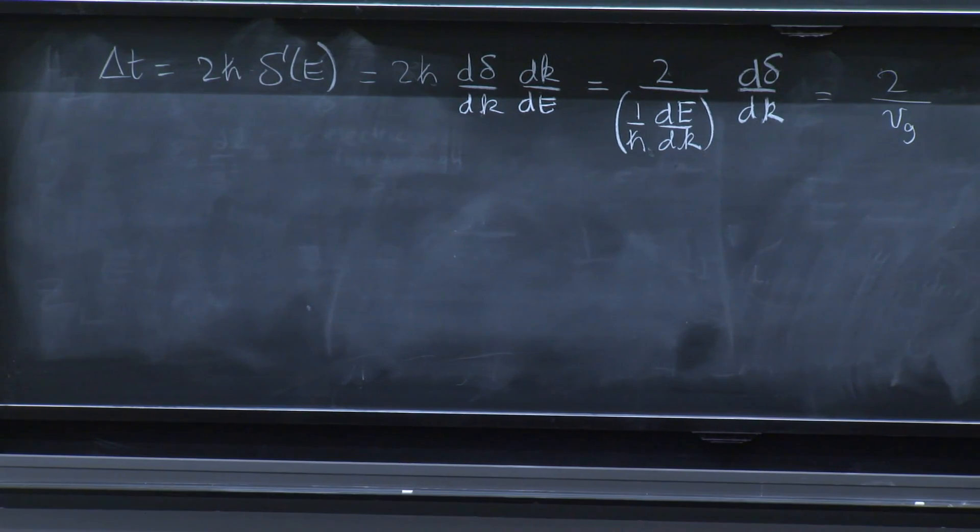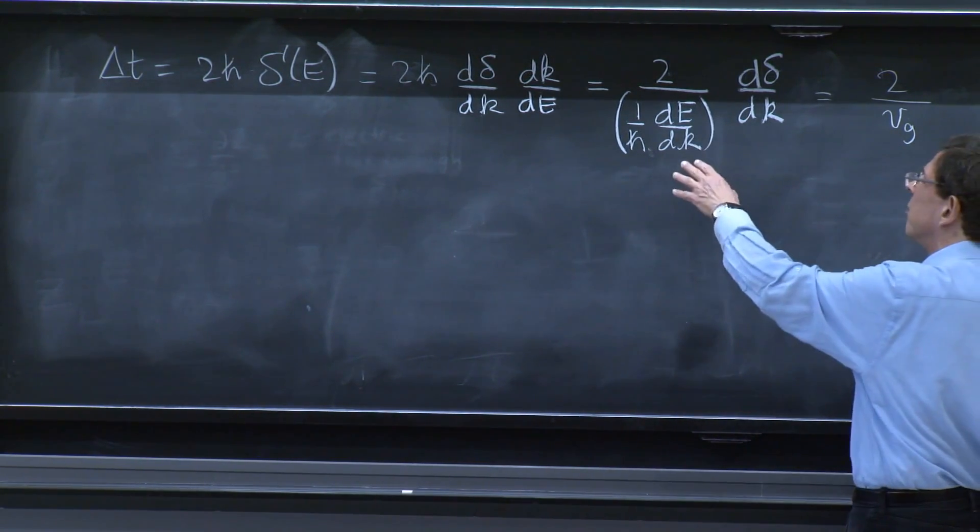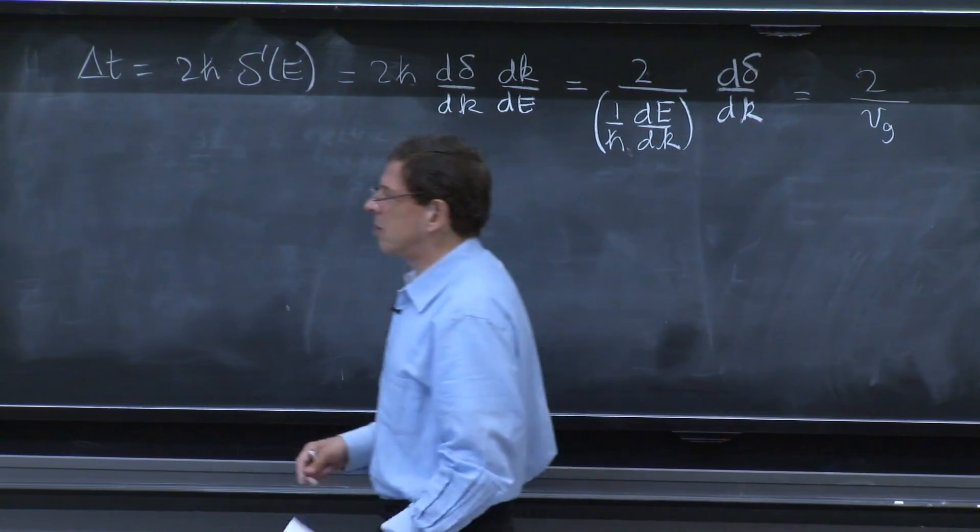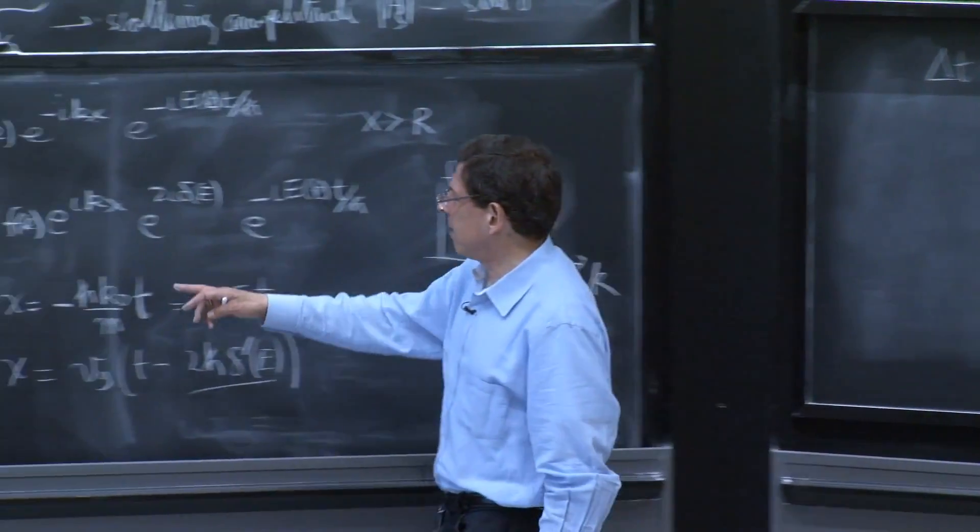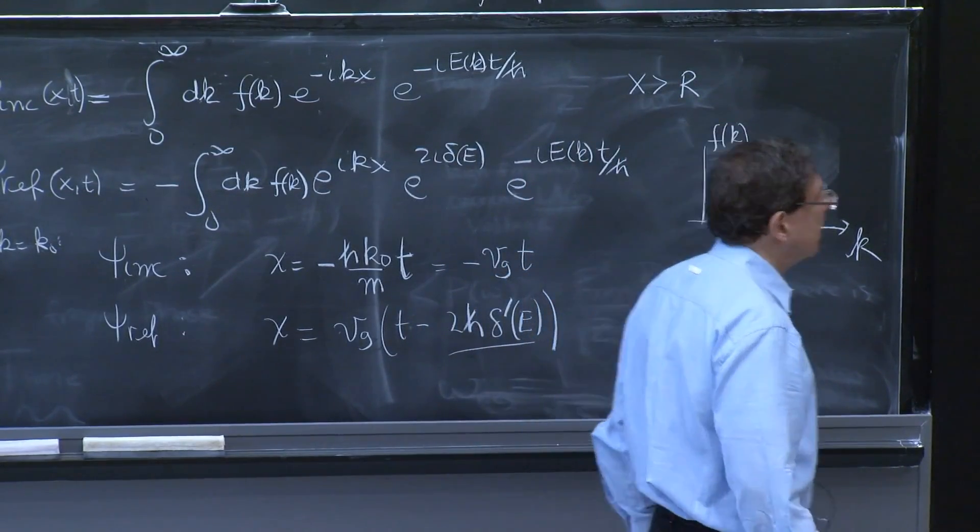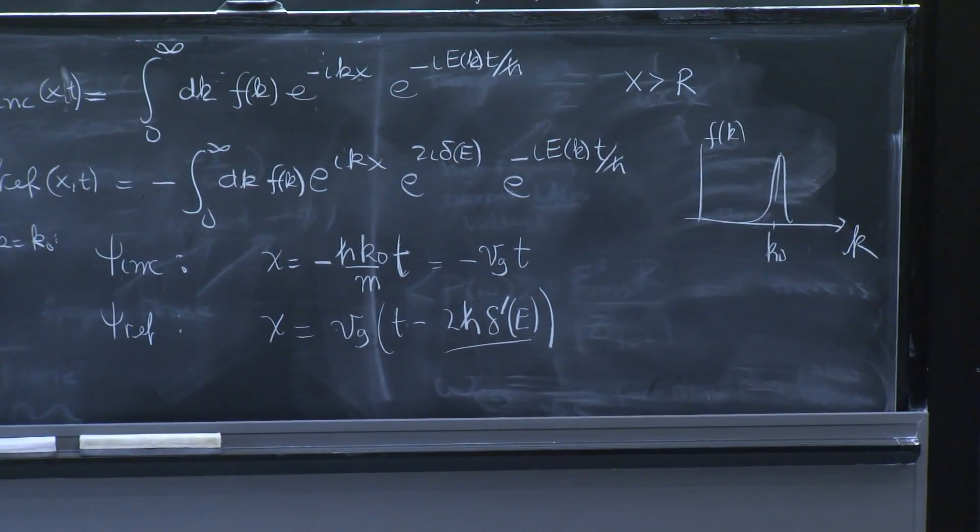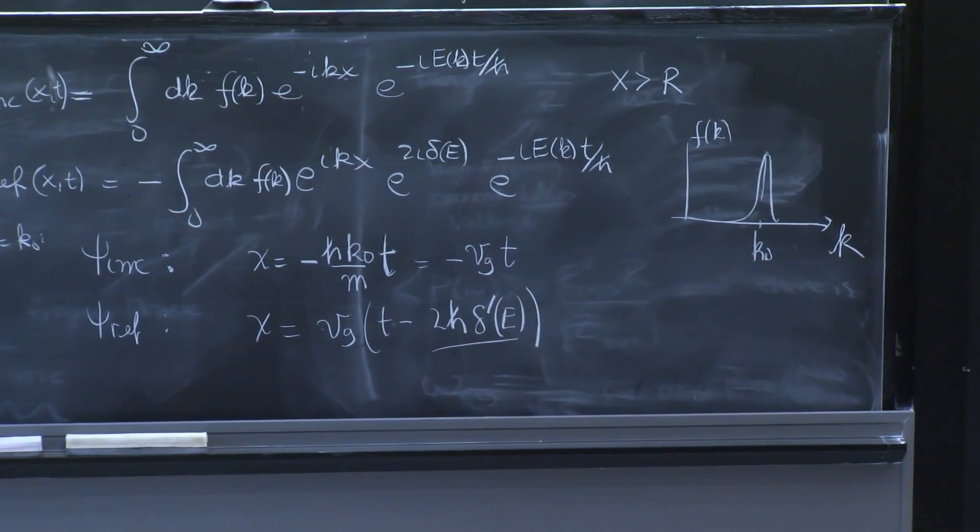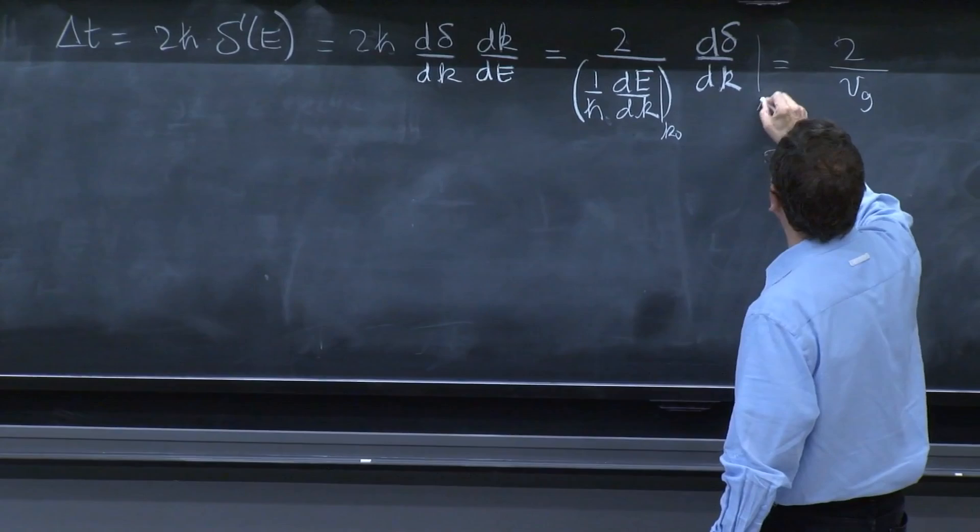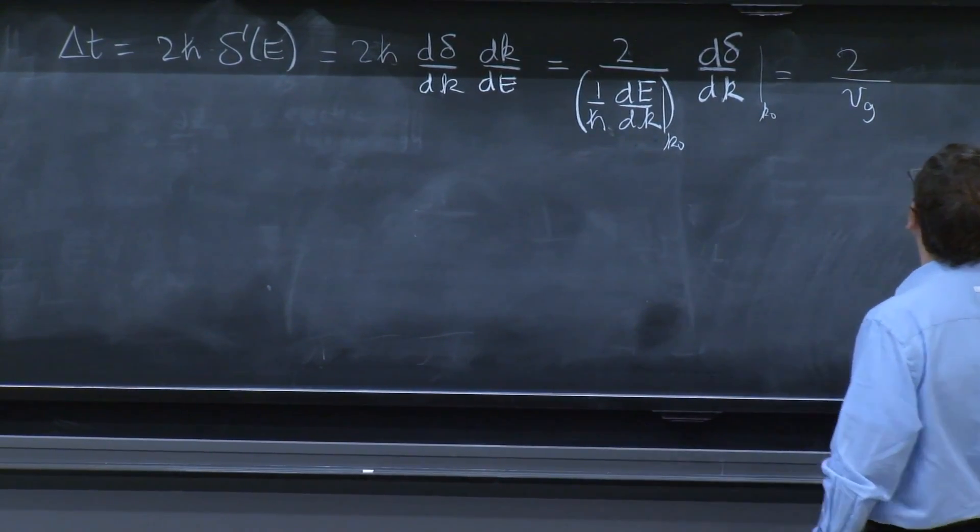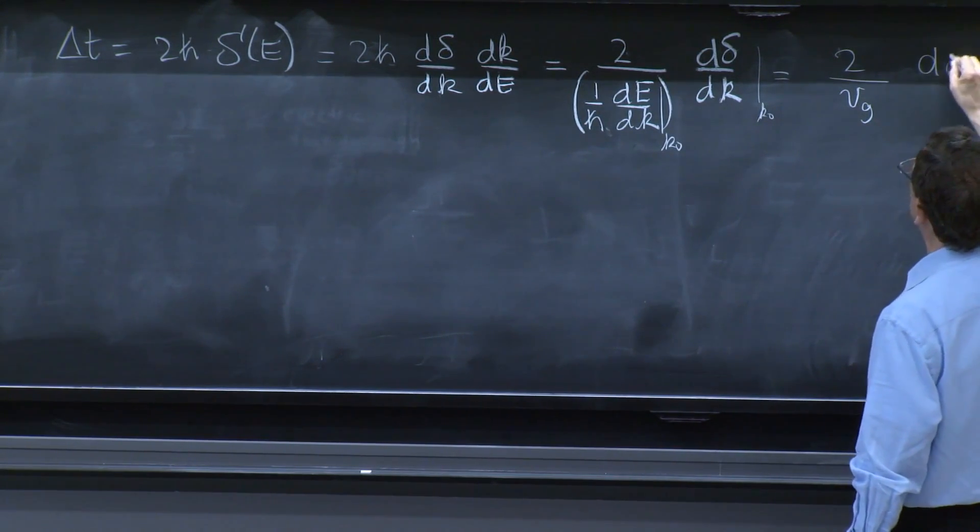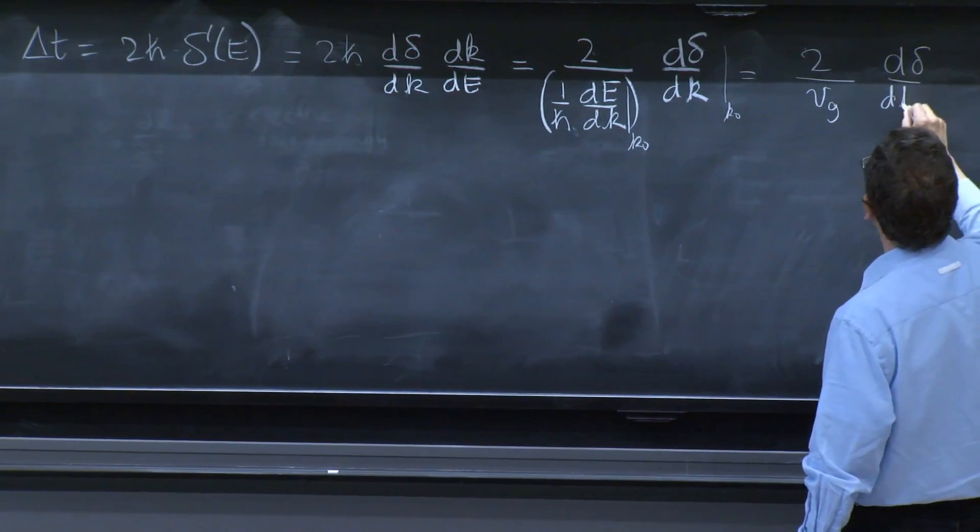The e, the energy, is h squared k squared over 2m. You differentiate, divide by h bar. And it gives you the group velocity h k0 over m. Because these derivatives all have to be evaluated at k0. So this derivative is really evaluated at k0. This is also evaluated at k0.